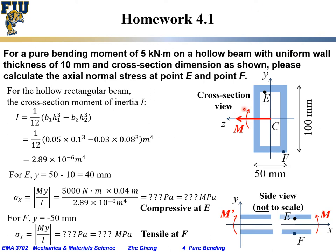As illustrated, the pure bending moment of 5 kilo-Newton meters acts on a hollow beam — a box beam with a rectangular cross section. We are looking at the cross section, and the wall thickness is uniform at 10 millimeters. The cross-section dimensions are 100 millimeters tall and 50 millimeters wide.